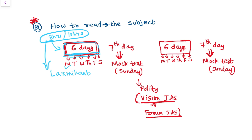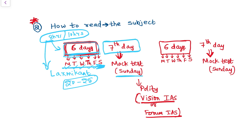Read Lakshmikant Monday for eight hours, Tuesday for eight hours, Wednesday for eight hours, Thursday, Friday, and Saturday also. Repeat it — read the subject for at least six days. Once you read Lakshmikant, you might have covered 20 to 25 chapters in these six days. On the seventh day, which is Sunday, make sure you give a mock test — a sectional test on polity based on Lakshmikant. Vision IAS, Forum IAS, and Insights IAS all conduct sectional tests.